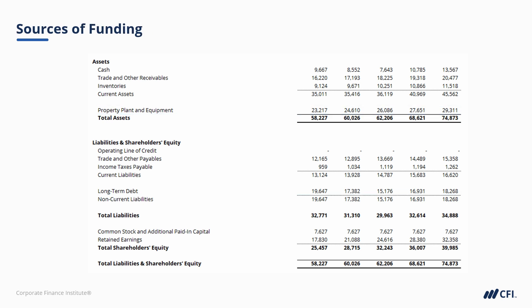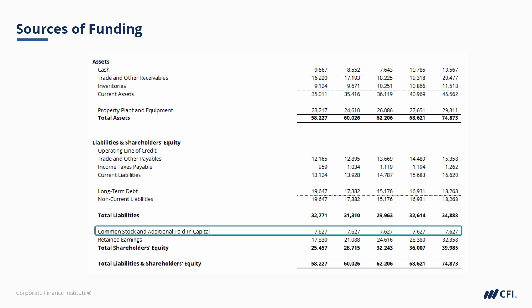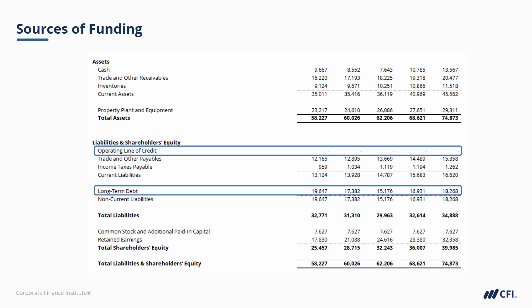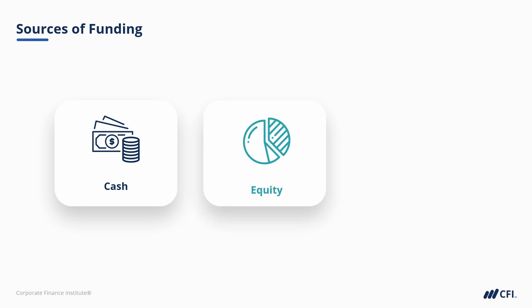There are three ways a company can fund its operations or its investments. The first is with cash that it already has on the balance sheet. If the company doesn't have enough cash, then it can either issue equity by creating new shares and selling them to investors, or it can use credit or debt and take the money from creditors to fund its new projects and initiatives. So these are the three sources: cash that it already has, new equity, or new credit.